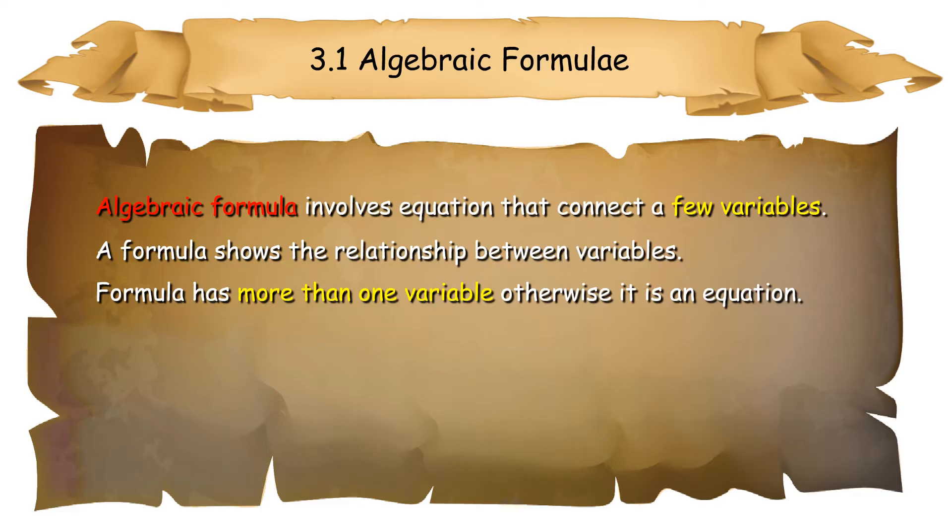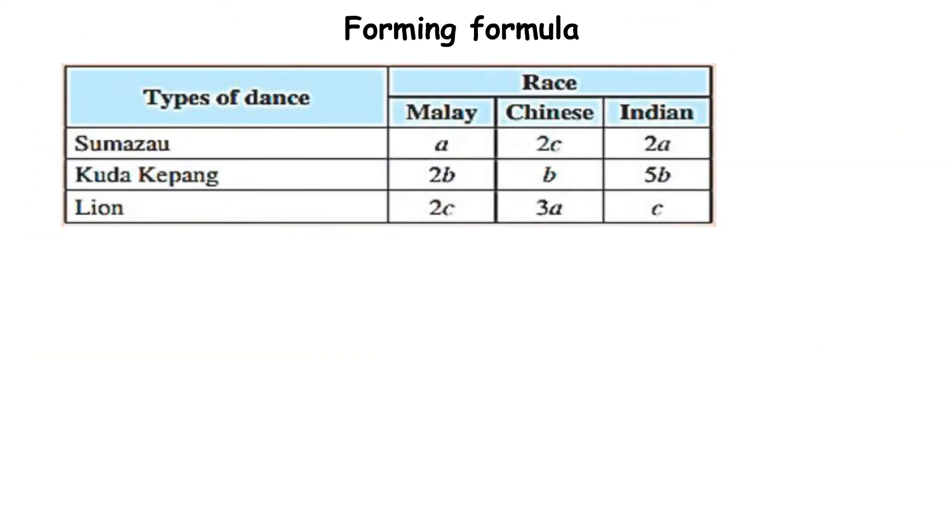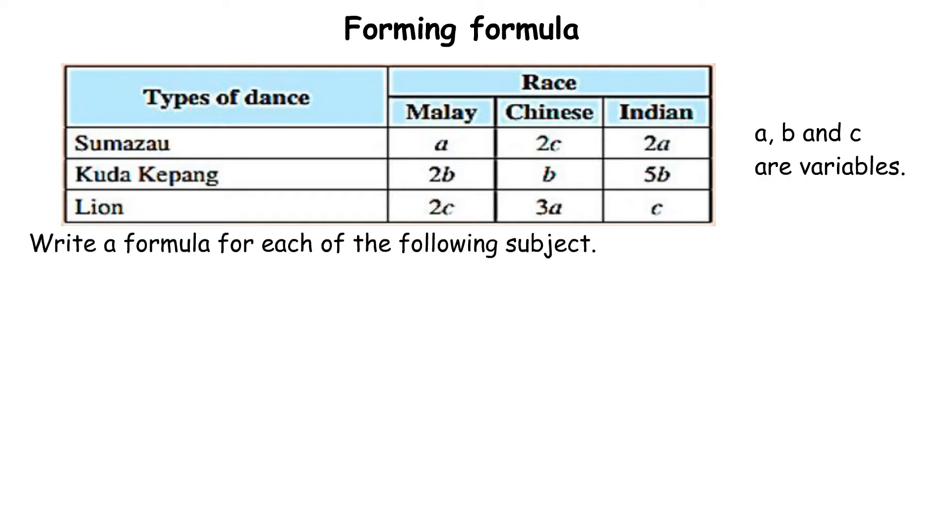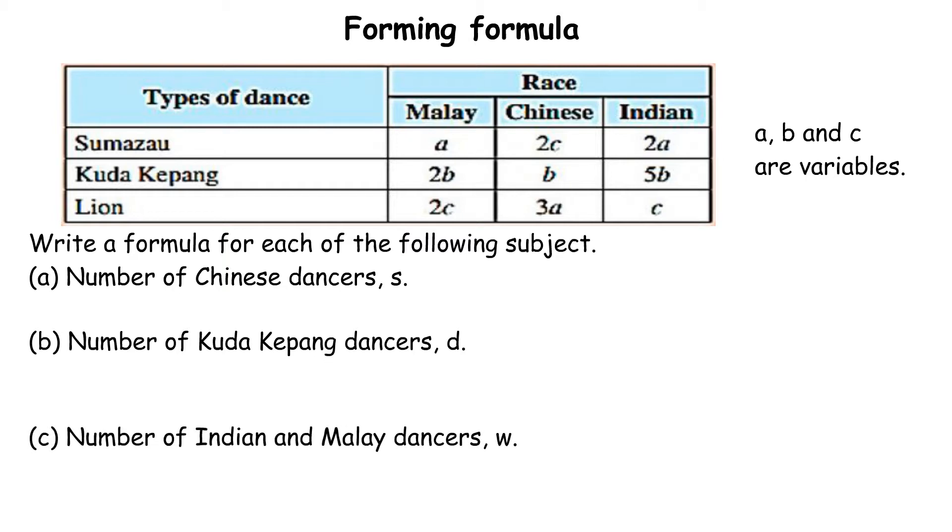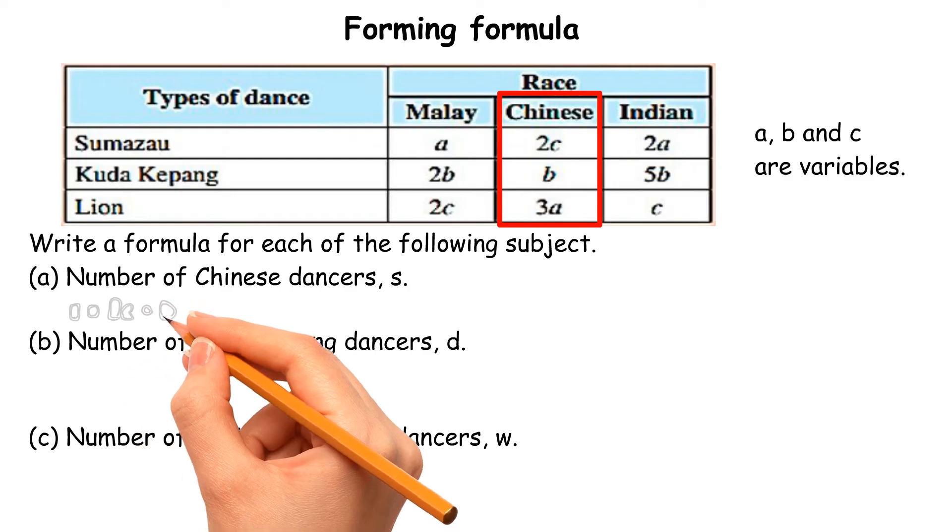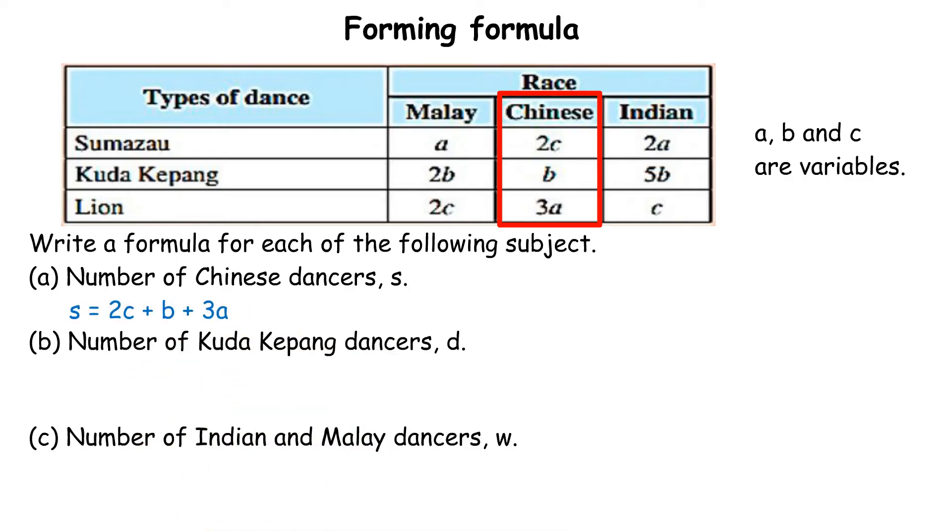For instance, a equals pi r squared. Forming Formula. The alphabets a, b, and c are known as variables. Write a formula for each of the following subjects: A, number of Chinese dancers s. B, number of Kuda Kepang dancers d. C, number of Indian and Malay dancers w. The formula is expressed as: A, s equals 2c plus b plus 3a.